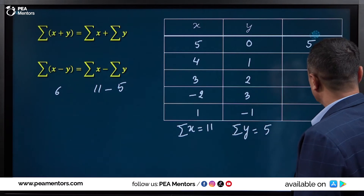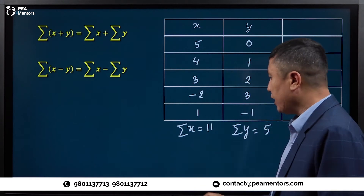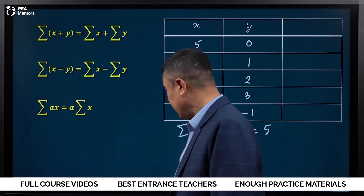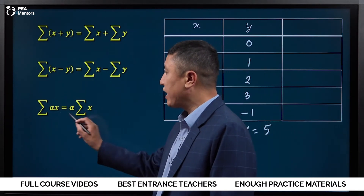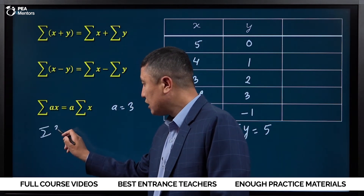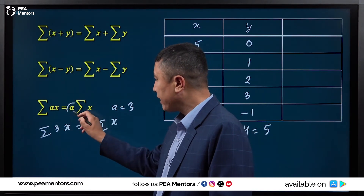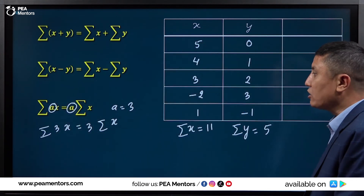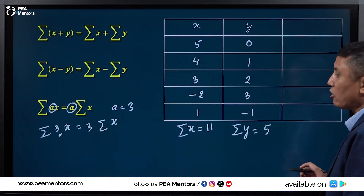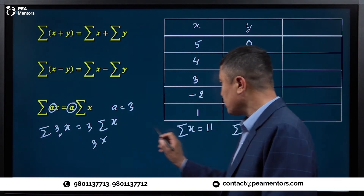11 minus 5, 6 is equal to 6. So, in the summation notation we can break the notation. A means a constant. Suppose a is equal to 3. We write a summation — 3 times x — and 3 times summation x. This is a constant. So, a summation x is 11, and this gives us 33.